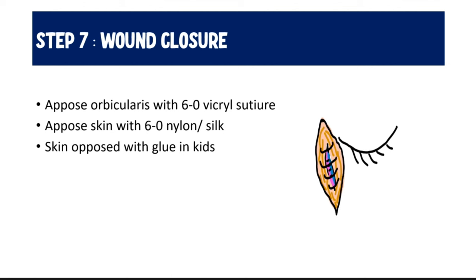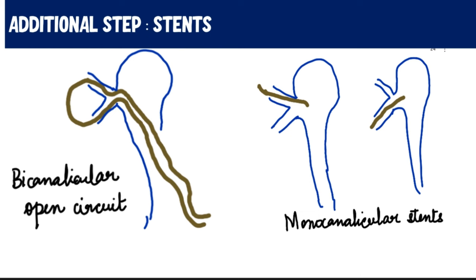The final step is wound closure. After the ostium is created and the flaps are sutured, the orbicularis is opposed with 6-0 Vicryl suture and the skin is sutured with 6-0 nylon or silk. In children, glue can be used to oppose the skin. As an extra measure, many surgeons place silicone stents into the lacrimal system to guarantee an open ostium and canalicular system, especially in cases of simultaneous canalicular blockage. These stents are generally removed after 8 to 12 weeks, although some advocate removal at about four weeks to prevent biofilm formation.